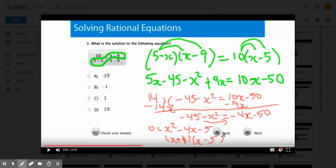So x equals 5 or x equals negative 1, and we have that choice right there. Hopefully that helps.